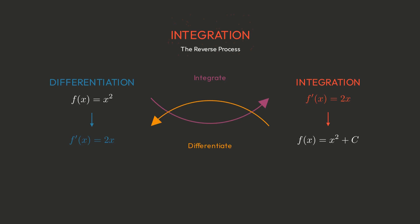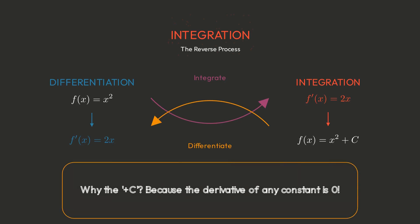We write this as the integral of 2x dx equals x squared plus c. That little c is crucial. It's the constant of integration, since the derivative of any constant is zero.